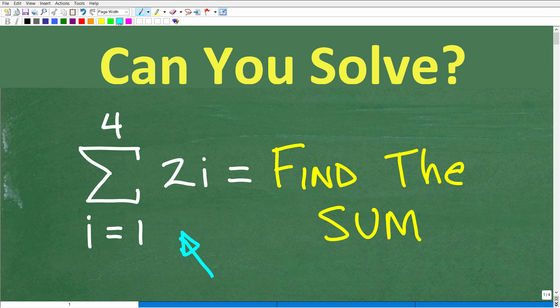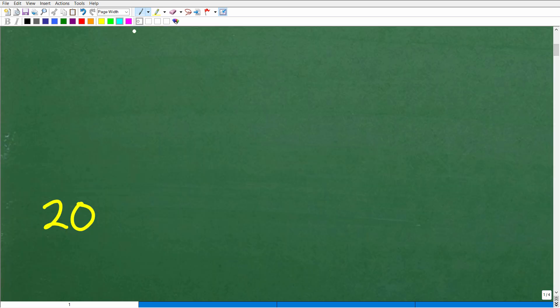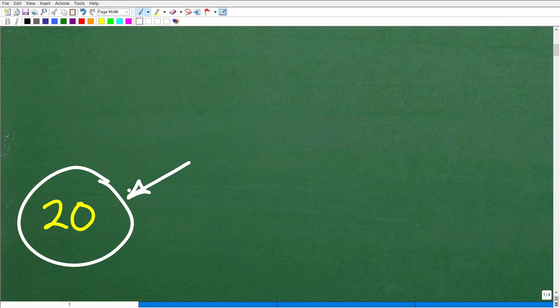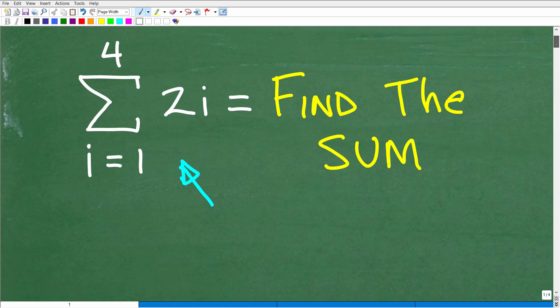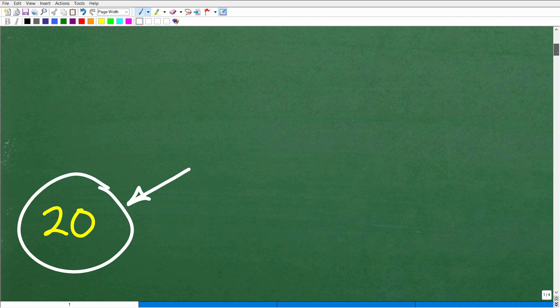So the answer is 20. So hopefully you're kind of not taken aback by this answer. Maybe you were expecting something more complicated. But all of this right here turns out to be equal to 20. Now, how do we get there?